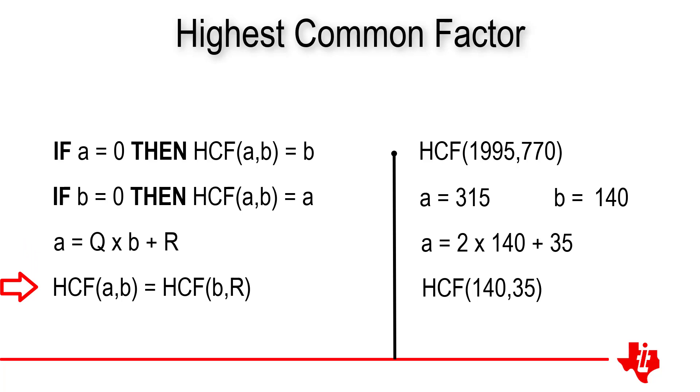Now we divide 140 by 35 and this time we get a remainder of 0. So the highest common factor of 35 and 0 is 35. So according to the algorithm, the highest common factor of 1,995 and 770 is 35.